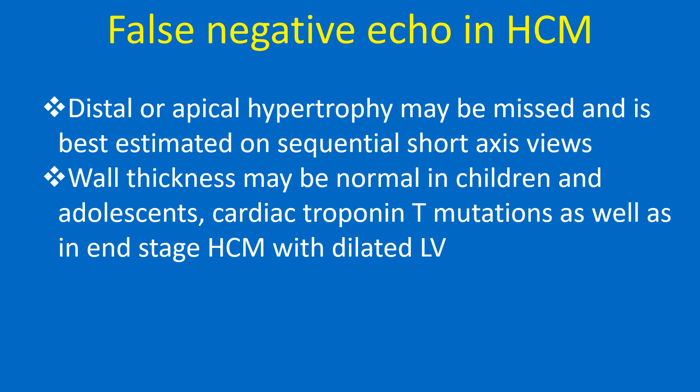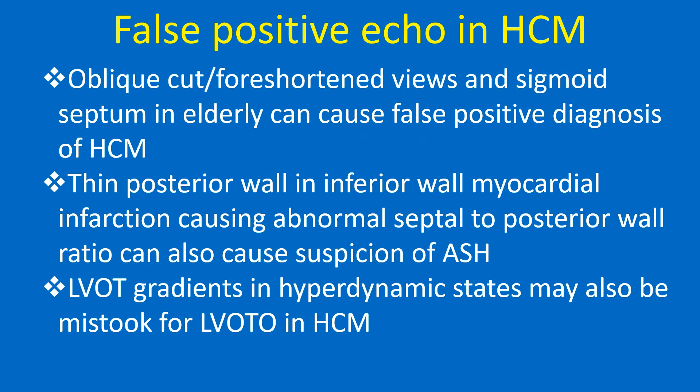False negative echo in HCM: Distal or apical hypertrophy may be missed and is best estimated on sequential short-axis views. Wall thickness may be normal in children and adolescents, in cardiac troponin T mutations, and in end-stage HCM with dilated LV. False positive echo in HCM: Oblique cut or foreshortened views and sigmoid septum in the elderly can cause false positive diagnosis of HCM. Thin posterior wall in inferior wall myocardial infarction causing abnormal septal-to-posterior wall ratio can also cause suspicion of asymmetric septal hypertrophy. LVOT gradients in hyperdynamic states may also be mistaken for LVOT obstruction in HCM.